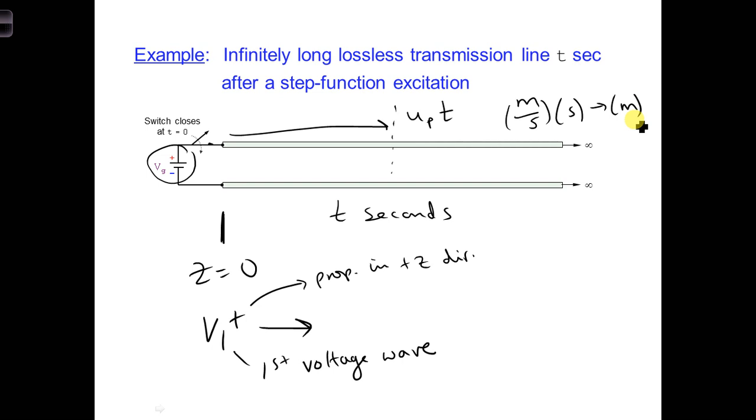And since there is air around the conductors, the electric and magnetic fields will be propagating through the air, so Up is about equal to the speed of light.